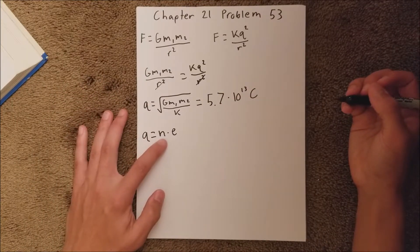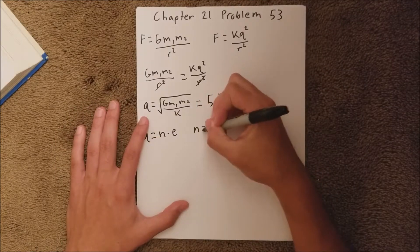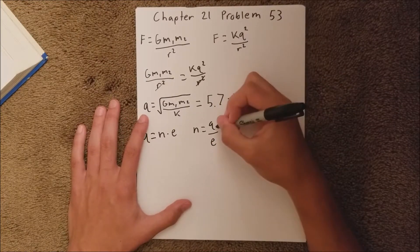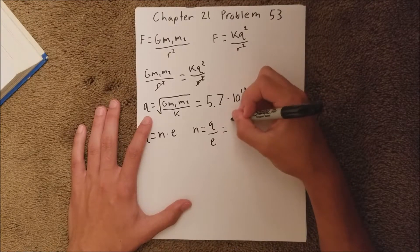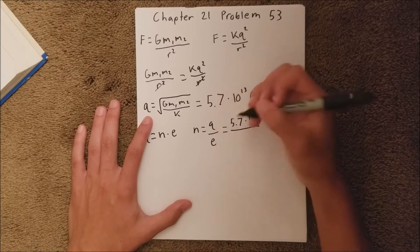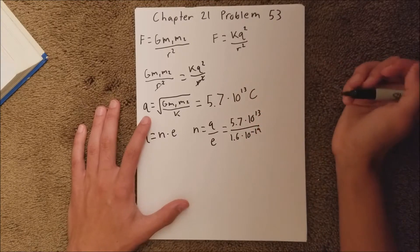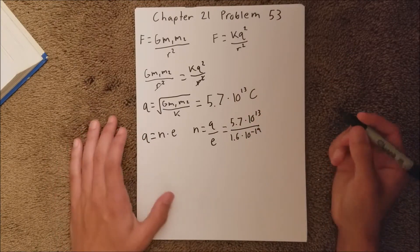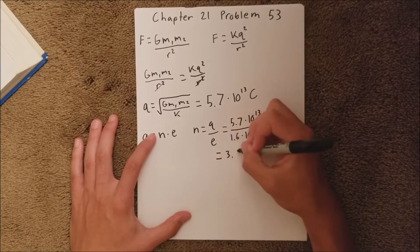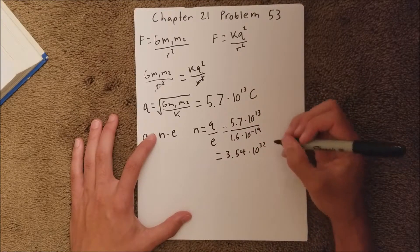And e is our elementary charge constant. And since we're trying to find the number of ions, we need to solve for that value n. So we're going to get n equals q over e, which the charge is right here, which we just found in Part A, divided by our constant e, 1.6 times 10 to the negative 19th. And when you put that in your calculator, you should get 3.54 times 10 to the 32nd ions.